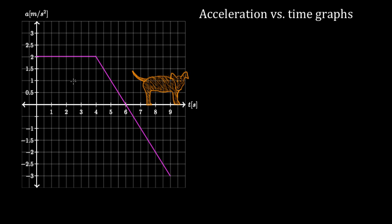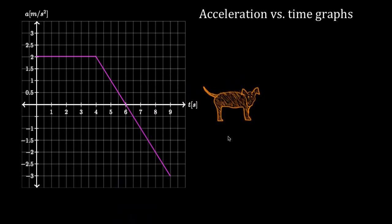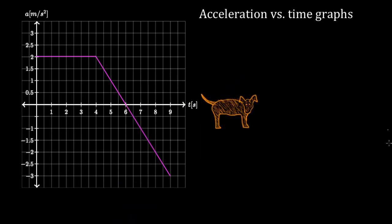So what can this graph tell you about the motion of Daisy? Let's say this graph describes Daisy's acceleration. So Daisy's going to be accelerating. Maybe we're playing catch — we'll throw the ball, hopefully she lets go when she brings it back. And this graph represents her acceleration.